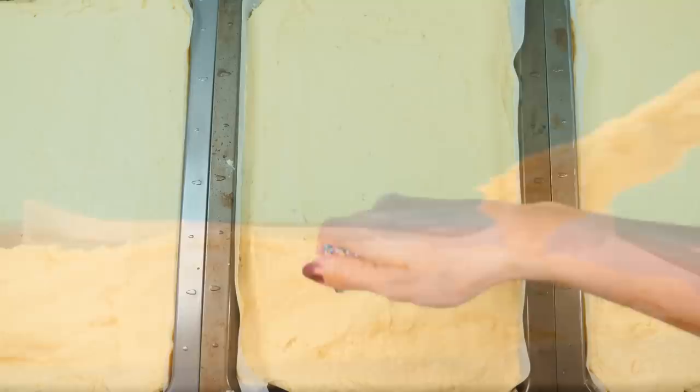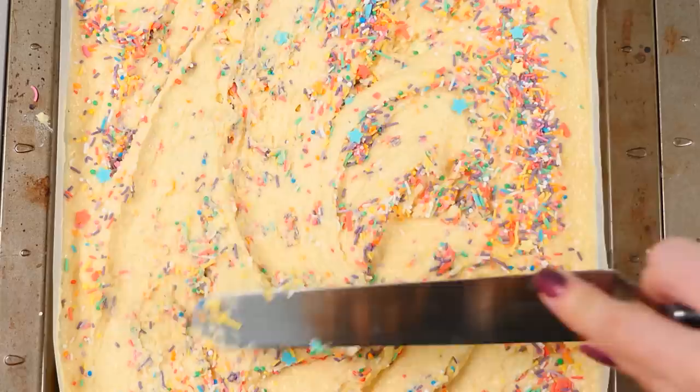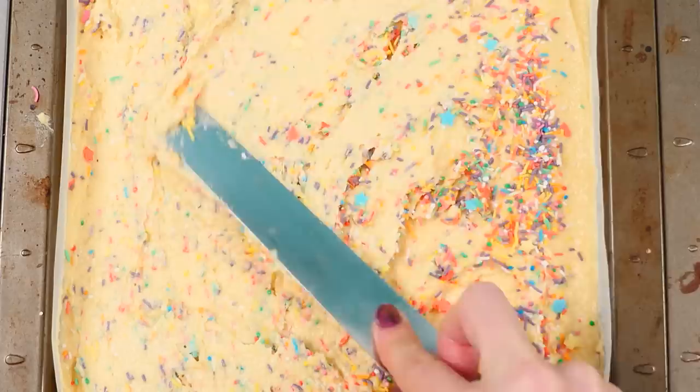Then you want to spread that out into three baking trays. Once it's all spread out evenly between them, sprinkle on some sprinkles. Now the reason I don't mix these through the cake batter earlier is because the color tends to run from the sprinkles and make the cake batter a weird color. So I like to sprinkle it on top and then give it a quick mix through and then just bake them in the oven like that and let them cool.